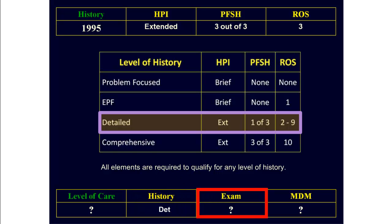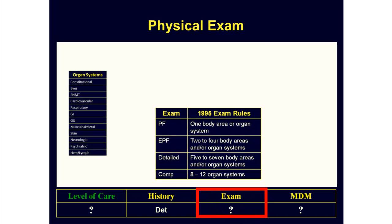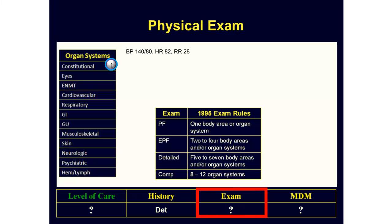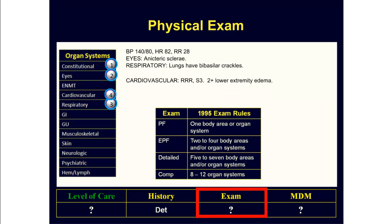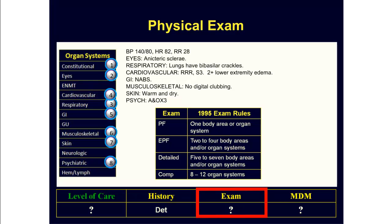The next step is to check the physical exam. Looking at the exam and using the 1995 guidelines, we see that information is recorded about the constitutional system, the eyes, the respiratory system, the cardiovascular system, the GI system, the musculoskeletal system, the skin, and the psychiatric system. This gives us eight organ systems, which means this qualifies as a comprehensive physical exam. So now the second key component is known.